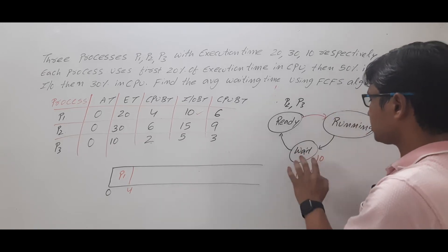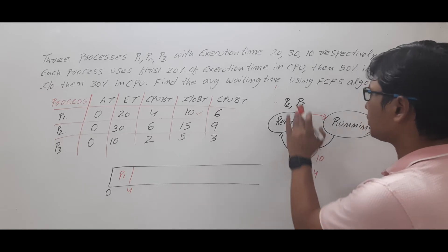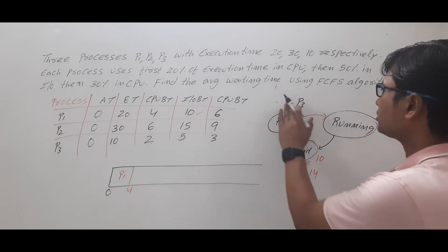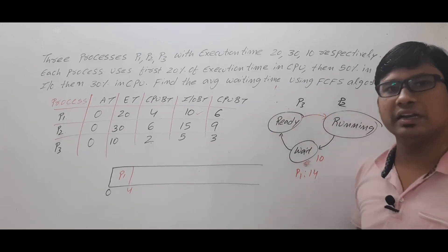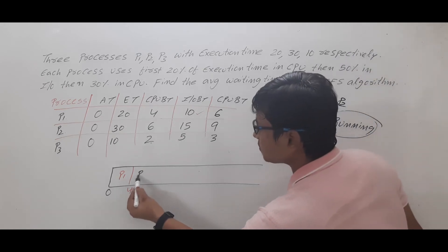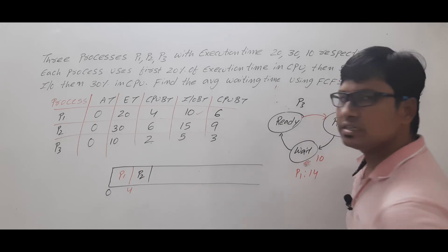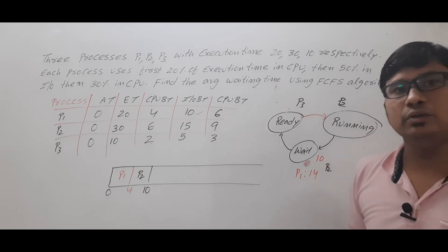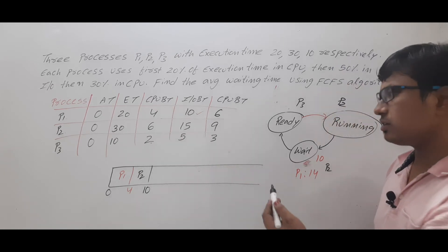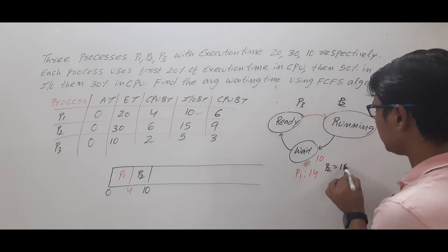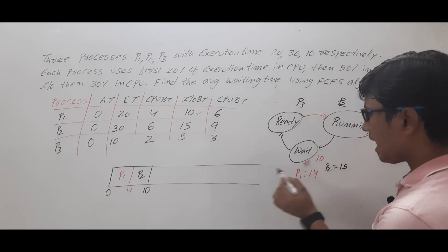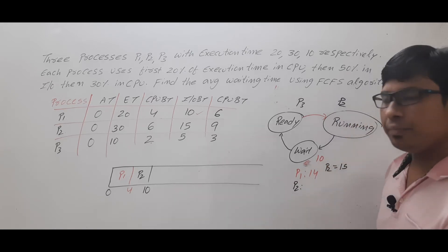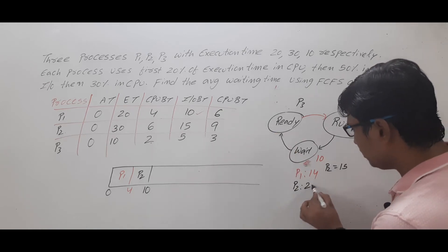Now, process P1 is in the wait state. Process P2 and P3 are in the ready state. P2 came first, so process P2 will be sent to the running state. It requires 6 units of CPU time, so at 4 plus 6 equals 10 units of time, process P2 will be sent to the wait state. It needs 15 units of IO time, so 10 plus 15 means process P2 will come back to the ready state at 25 units of time.